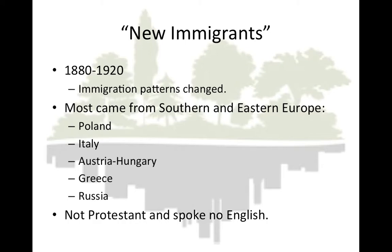Patterns of immigration changed in the 1880s. The construction of railroads across Europe and the appearance of large ocean-going steamships made the voyage to America more accessible to many Europeans. Most of these new immigrants came from Southern and Eastern Europe, especially Poland, Italy, Austria-Hungary, Greece, and Russia. They were often Catholic, Jewish, or Orthodox Christian rather than Protestant, and most spoke no English.